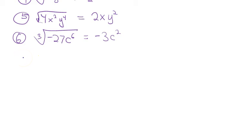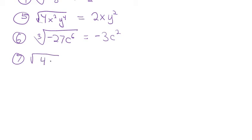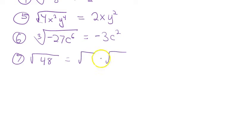Sometimes your directions say to give an exact answer, meaning no decimals. For square roots that aren't perfect squares, you have to break them down. For the square root of 48, find the biggest perfect square that divides into 48. Yes, 4 works, but it's not the biggest — 16 is the biggest perfect square factor.